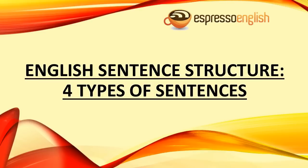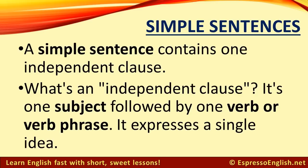English sentence structure: four types of sentences, from EspressoEnglish.net. A simple sentence contains one independent clause. What's an independent clause? It's one subject, followed by one verb or verb phrase. It expresses a single idea.